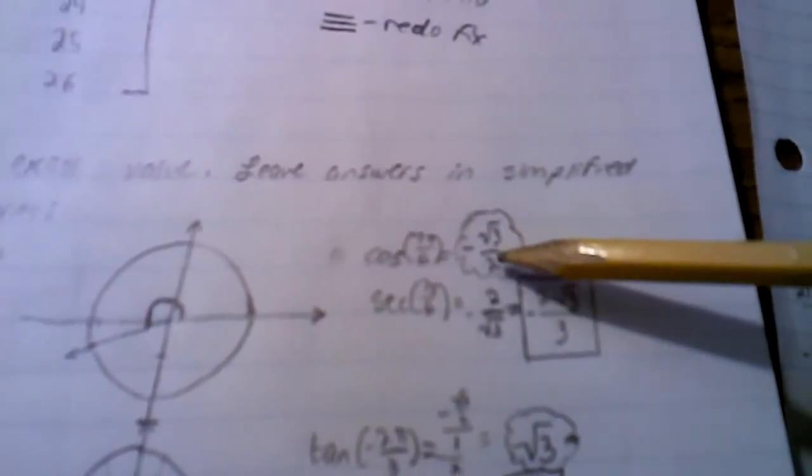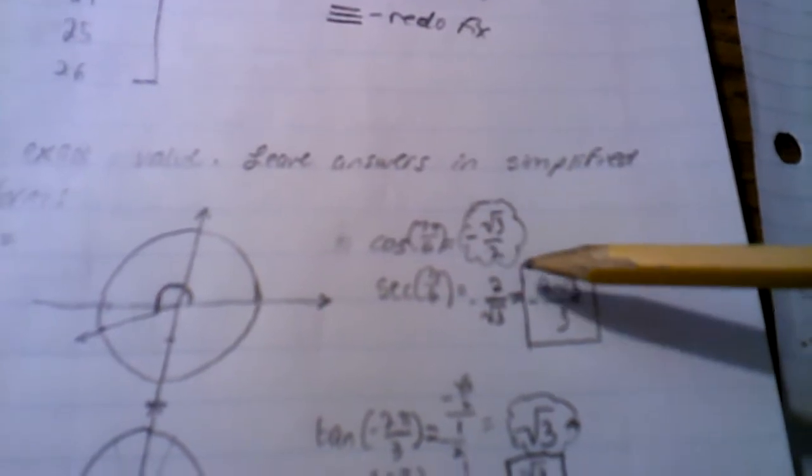That's going to be negative √3 over 2. Then you take the secant of 7π/6, that's going to be negative 2 over √3. And then you need to get the radical on top, so it's going to be negative 2√3 over 3.